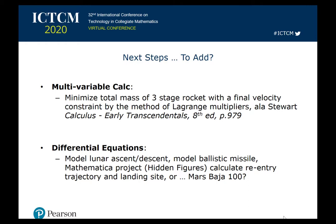In the multivariable calc chapter, there's an example in the Stewart book for minimizing total mass for a three-stage rocket with a final velocity constraint given by the method of Lagrange multipliers. It would be neat to implement that in Kerbal Space Program and put it into the workbook as something you could actually experiment with in the game — that would be really fun.